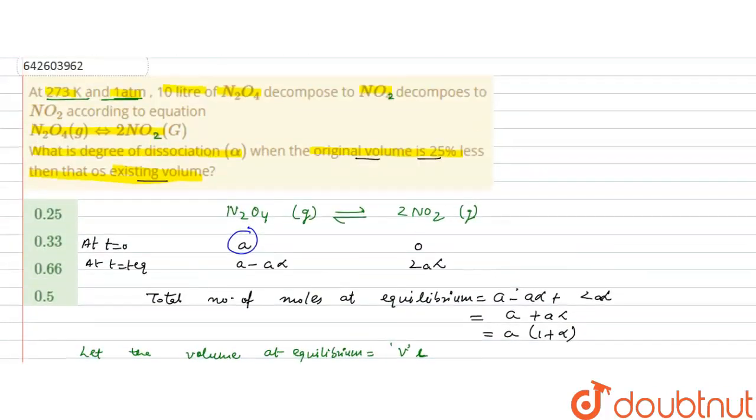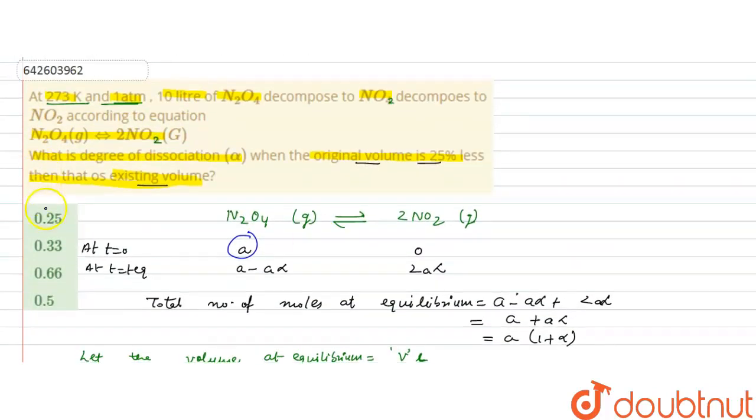The correct option to this question is the degree of dissociation alpha is 0.33. I hope you understood this solution. Thank you.